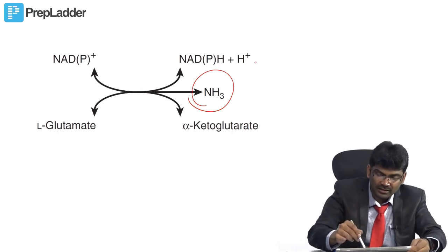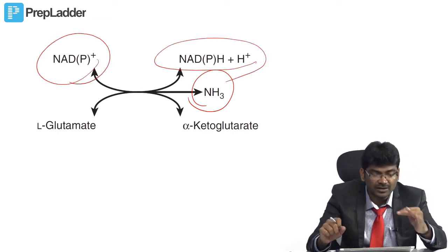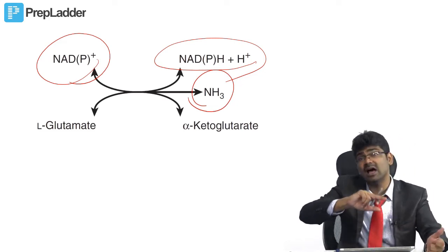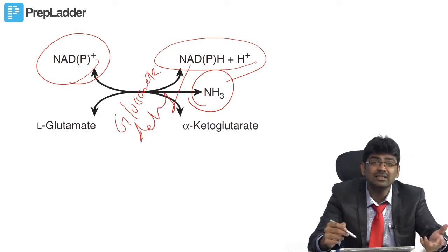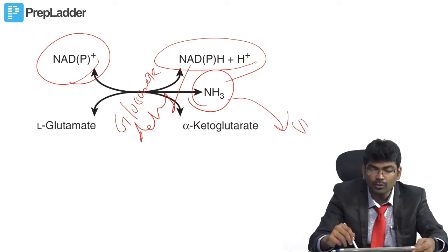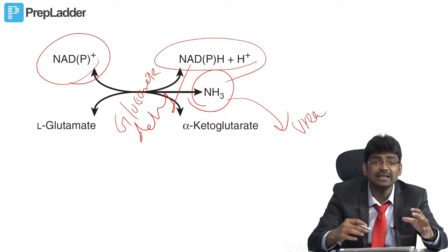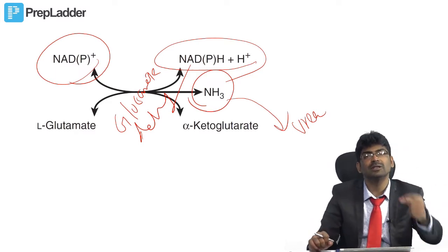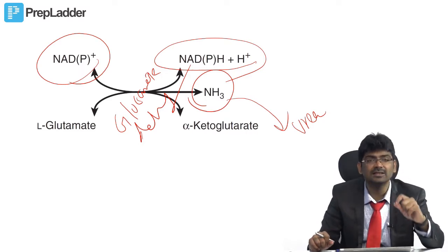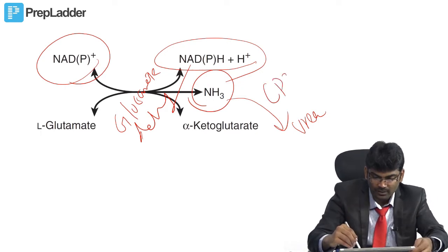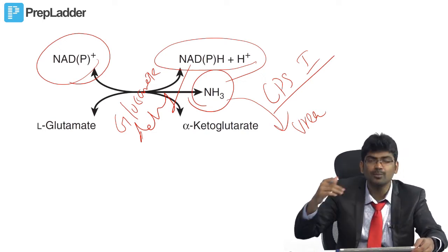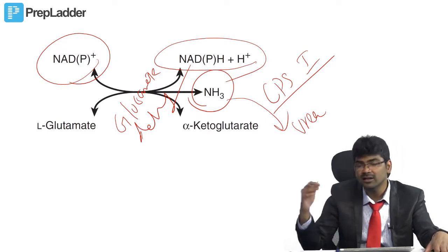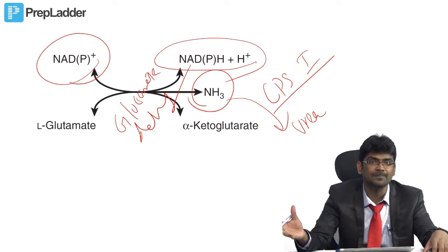Glutamate is the amino acid which undergoes significant oxidative deamination. Ammonia is released and there is oxidation. The enzyme glutamate dehydrogenase has a unique feature: it can use either NAD+ or NADP+ as a cofactor. The fate of this ammonia is conversion into urea by the urea cycle. This reaction happens in hepatic mitochondria where carbamyl phosphate synthetase 1 (CPS1) acts on ammonia. The urea cycle starts in the mitochondria and the remaining steps occur in the cytoplasm.